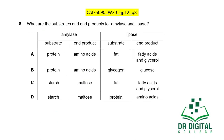In this question, what are the substrates and end products for amylase and lipase? Amylase digests starch, so the substrate must be starch — options A and B are wrong, C and D remain. The product of amylase acting on starch is maltose. Lipase is not for protein digestion — it digests fats and oils. When fats are digested, fatty acids and glycerol are produced. So option D is wrong because it lists protein as the substrate for lipase. The answer is C.